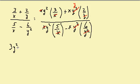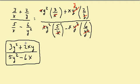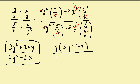So I'm left with 3y squared. y squared times 3 is 3y squared, and x times y times 2 is plus 2xy, over y squared times 5 is 5y squared, and then x times 6 is minus 6x. Nothing is going to cancel, but we could factor out a y. This right here is my final answer, or if I wanted to, I could factor a y out of the numerator, which would leave me with y times (3y + 2x) over 5y squared minus 6x.